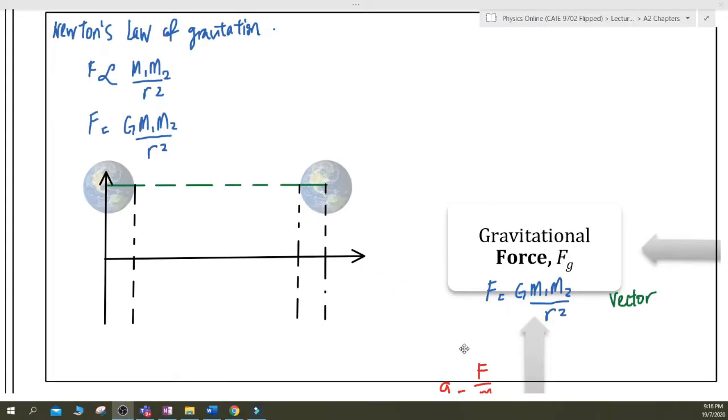So you should know how to sketch the graph. The graph for a single point mass you can find from the notes is pretty straightforward. It's just a 1 over r squared shape. But I just want to draw the slightly more complicated one when there are two, let's say there are two identical planets, you can see.